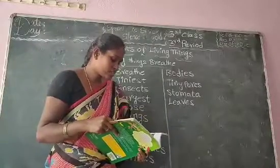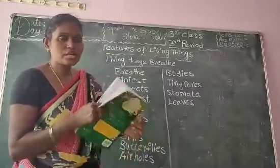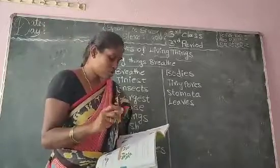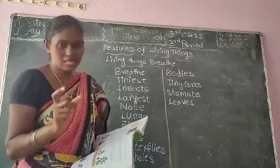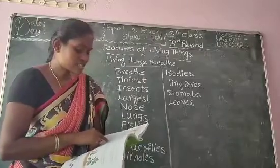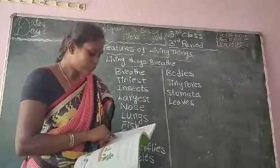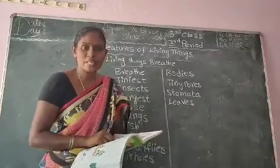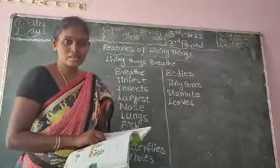From the tiniest insect to the largest animal, all living things breathe. Some animals have a nose and lungs. Fishes have gills. Butterflies and insects have tiny air holes. Plants have stomata. Stomata means patra randramu. Do you understand?